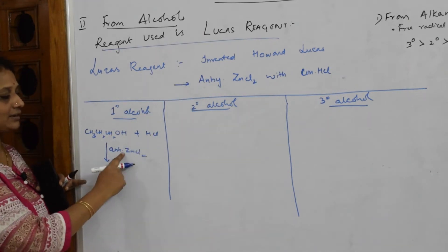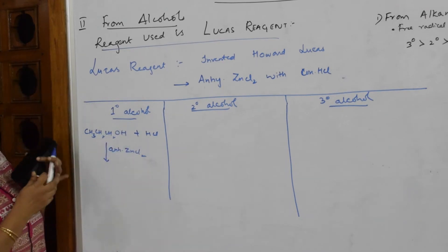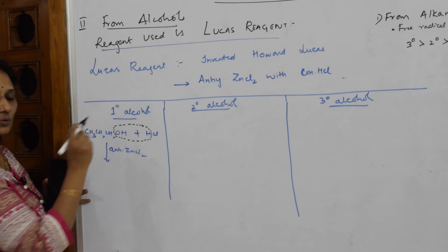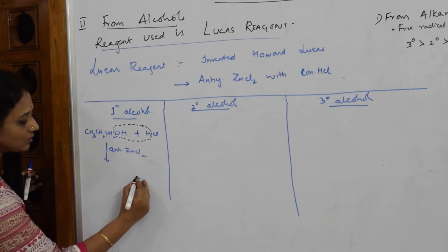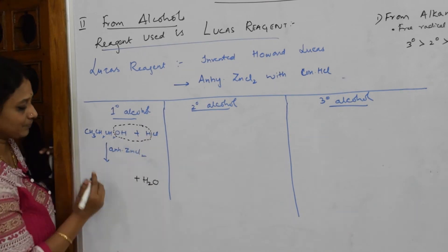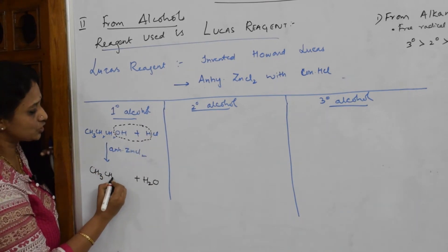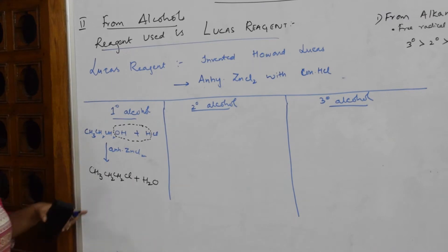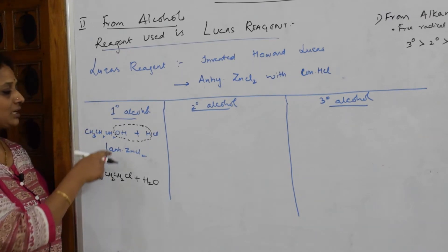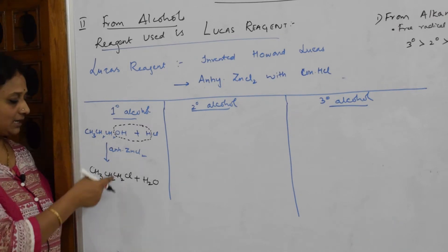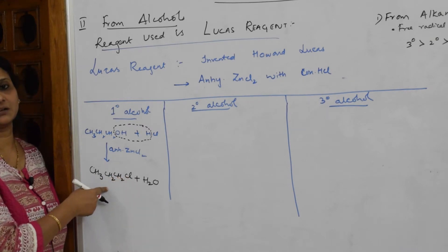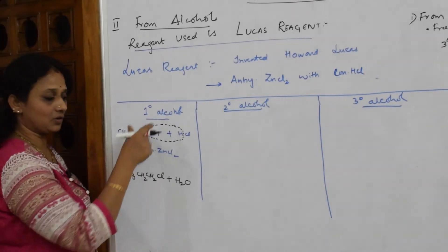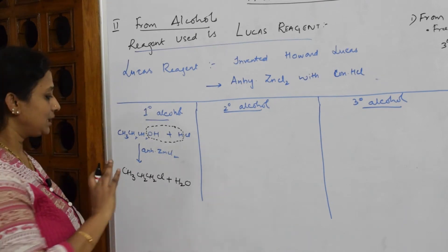I'm going to add anhydrous ZnCl₂ and concentrated HCl — Lucas reagent — to this. The OH will come out and Cl will go in. Water is released, leaving CH₃CH₂CH₂ and the nucleophile Cl comes and replaces. So from propanol I have prepared chloropropane — a haloalkane.